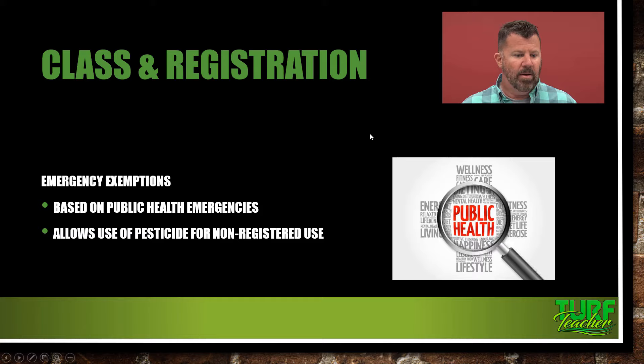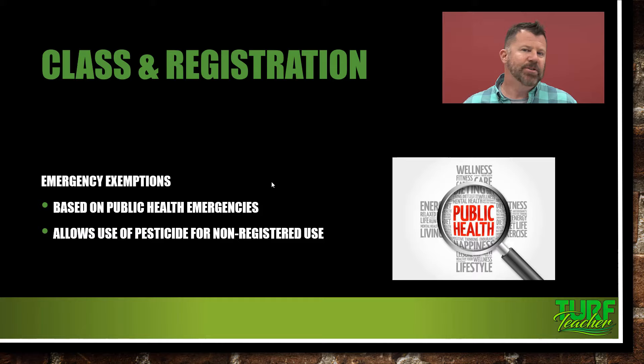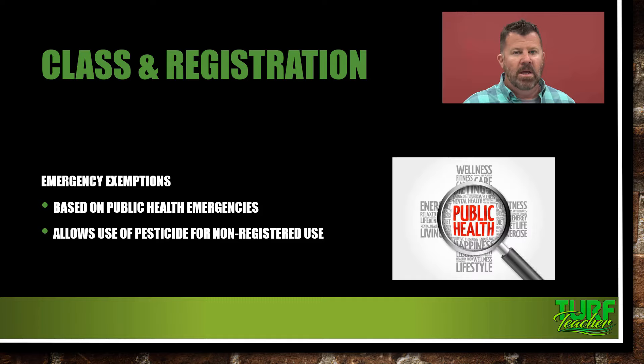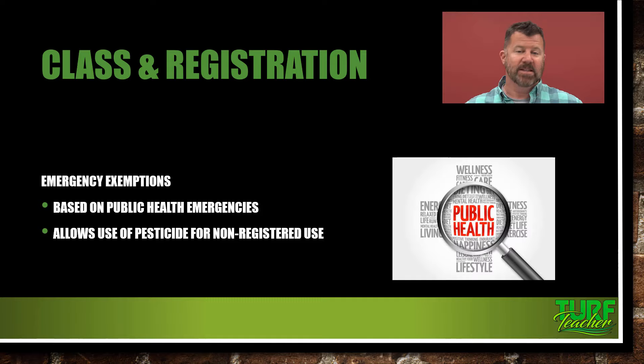Emergency exemptions are based on public health emergencies. If something were to break out, the federal government steps in to take care of the health emergency. It allows for the use of a pesticide that is not registered for use. A scientist comes up with an idea that will take care of something killing humans in a certain area, and since it's deemed to work on the first group of test animals and it's a national emergency situation, the pesticide can be used under an emergency exemption.